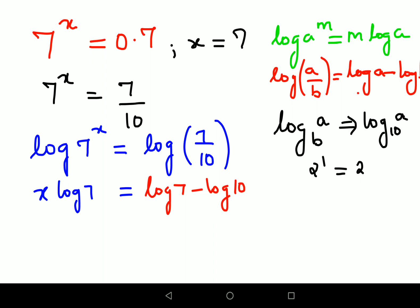So now always remember that log of any number to the same base will always be 1. So here this now becomes log 7 minus 1, and this is still x log 7.